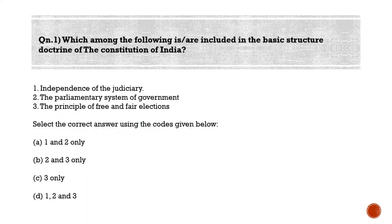First question for the day: which among the following are included in the basic structure doctrine of the Constitution of India? One - independence of judiciary; two - the parliamentary system of government; three - the principle of free and fair elections. Option A: one and two only; option B: two and three only; option C: three only; option D: one, two and three. The correct answer is option D - one, two and three.